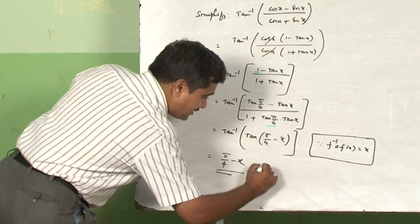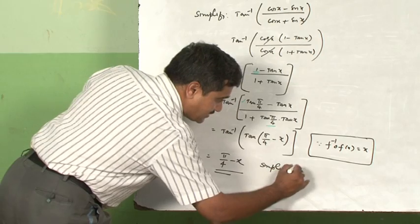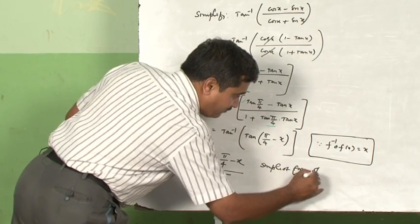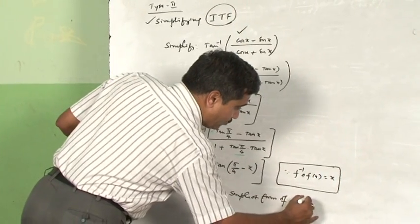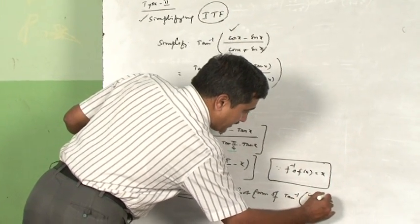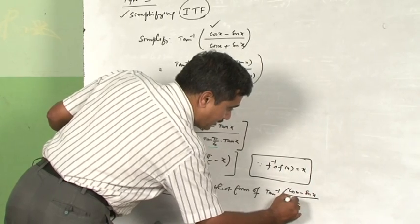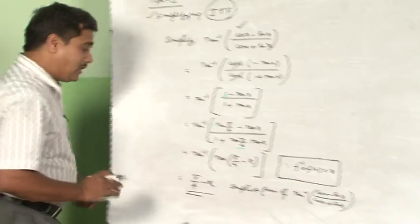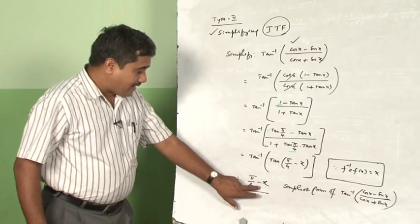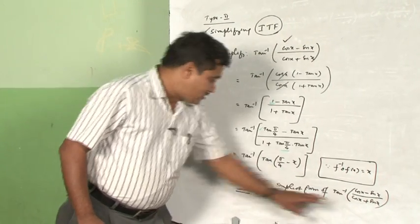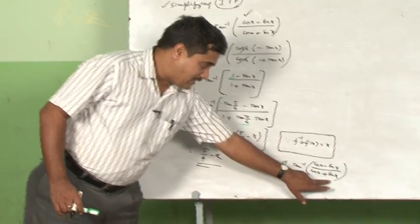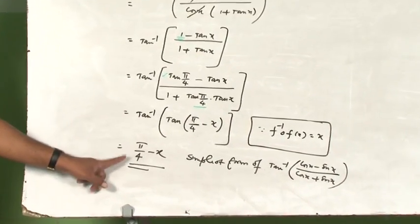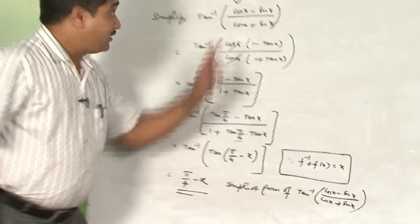This is the simplest form of the given expression tan⁻¹((cosx − sinx)/(cosx + sinx)). It is very difficult to see this format unless you have practiced these problems. Note that tan⁻¹ is being an angle, and you got exactly an angle — this is how you simplify inverse trigonometric functions.